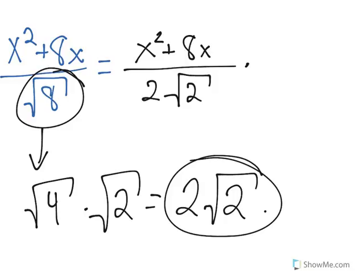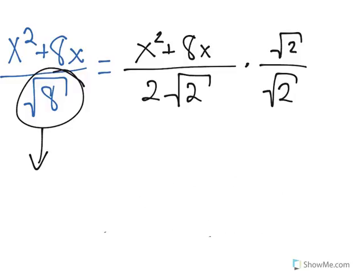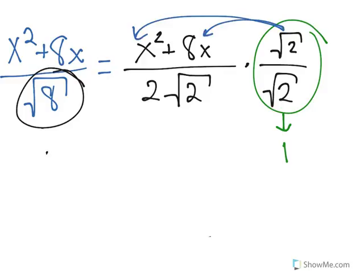By doing so, now we just need to multiply everything by square root of 2 over square root of 2. Remember that we can multiply by this because square root of 2 over square root of 2 equals 1, and x times 1 equals x, so we don't change anything. So back to the problem.